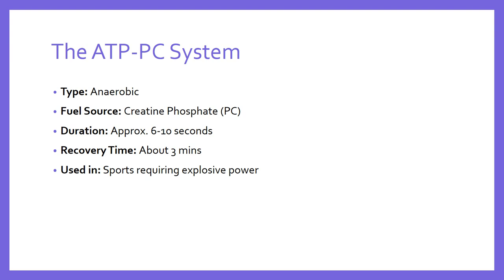We shorten creatine phosphate to PC, though sometimes you'll see it shortened to CP depending on where you are in the world — creatine phosphate or phosphocreatine, either is fine. The system lasts between about six and ten seconds, picking up from where the ATP already stored in the muscle leaves off and continuing to produce enough energy for muscular contraction up to around ten seconds. In terms of recovery time, after about three minutes of not using this energy system, it's basically topped back up and ready to go again — almost back to 100 percent.